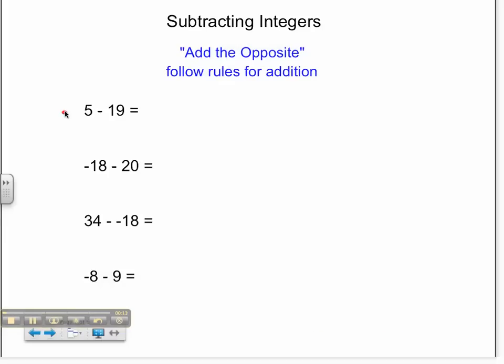Our first problem is 5 minus 19. I'm going to make my minus a plus and then find the opposite of 19. The opposite of positive 19 is negative 19, so my new problem is 5 plus negative 19.